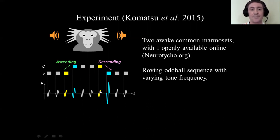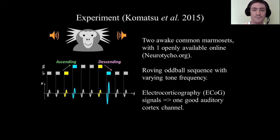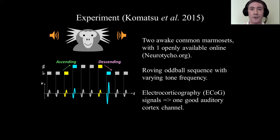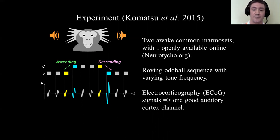After running this experiment, you can extract the waveforms evoked by these stimuli to produce the evoked potential and analyze mismatch negativity. The authors had recorded ECoG, or electrocorticography, signals across one half of the cortex, and they identified one good auditory cortex channel that showed relatively clean auditory responses.